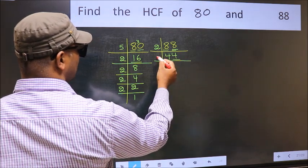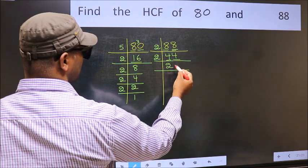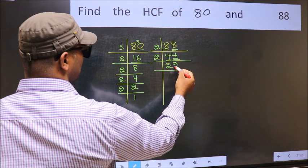Now last digit 4, even so take 2. First number 4. When do we get 4 in 2 table? 2, 2 is 4. The other number 4. When do we get 4 in 2 table? 2, 2 is 4.